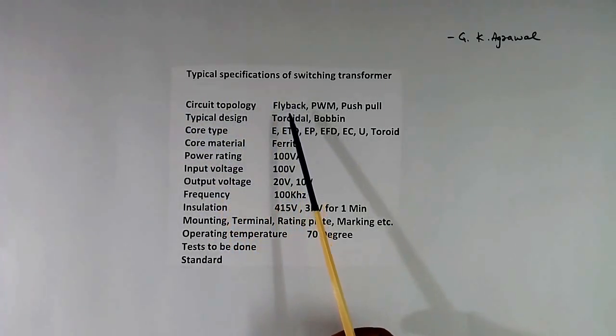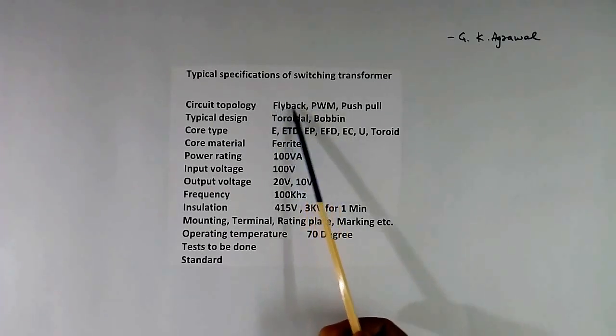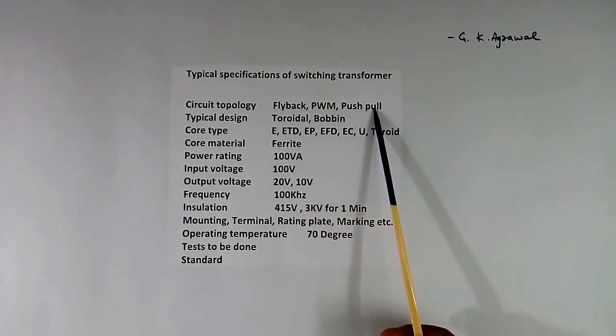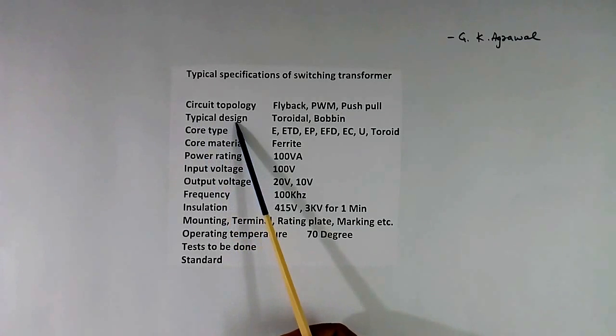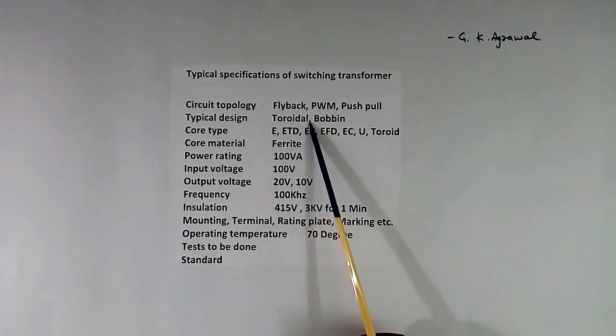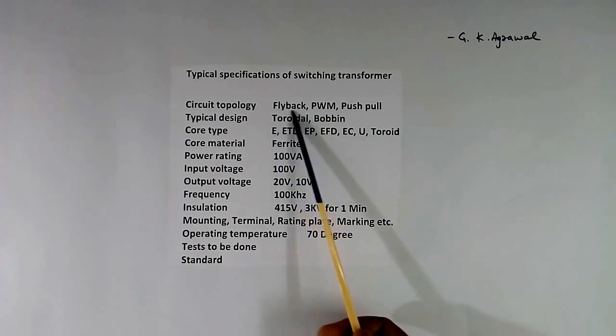One is circuit topology, what is the circuit we are going to use: flyback, PWM, push pull. Typical design, we want radial type or bobbin type. In this, there is no bobbin.